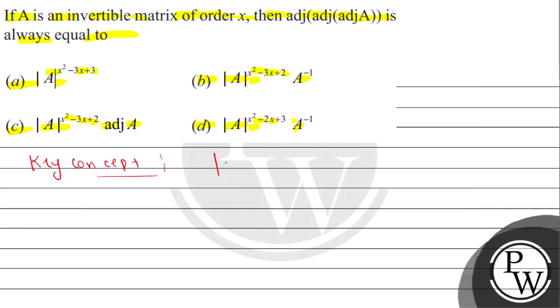This is the determinant of adjoint of A. This is the determinant of A to the power n minus 1, where n is the order of the matrix.